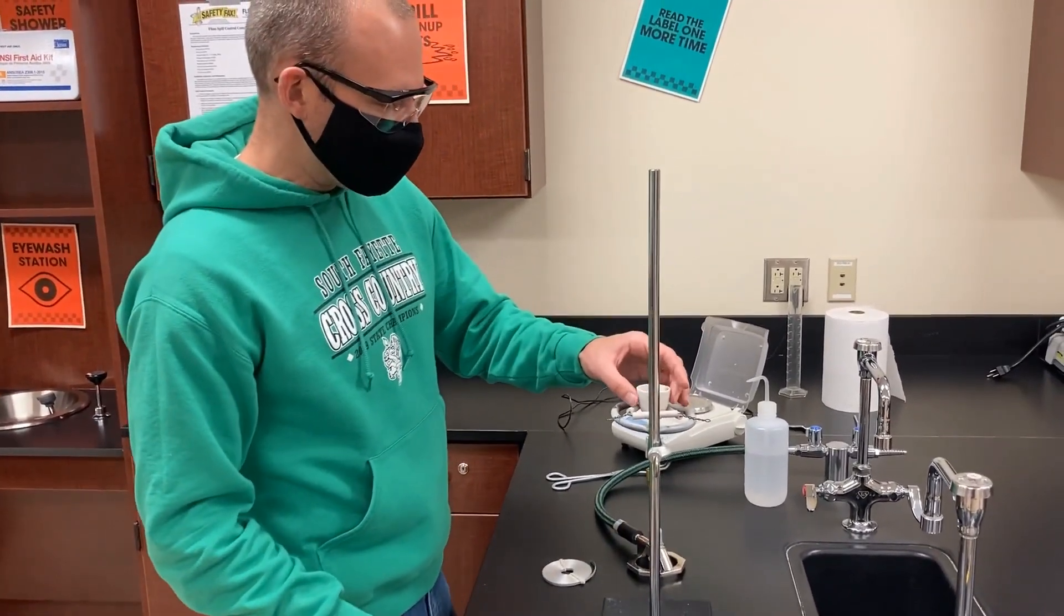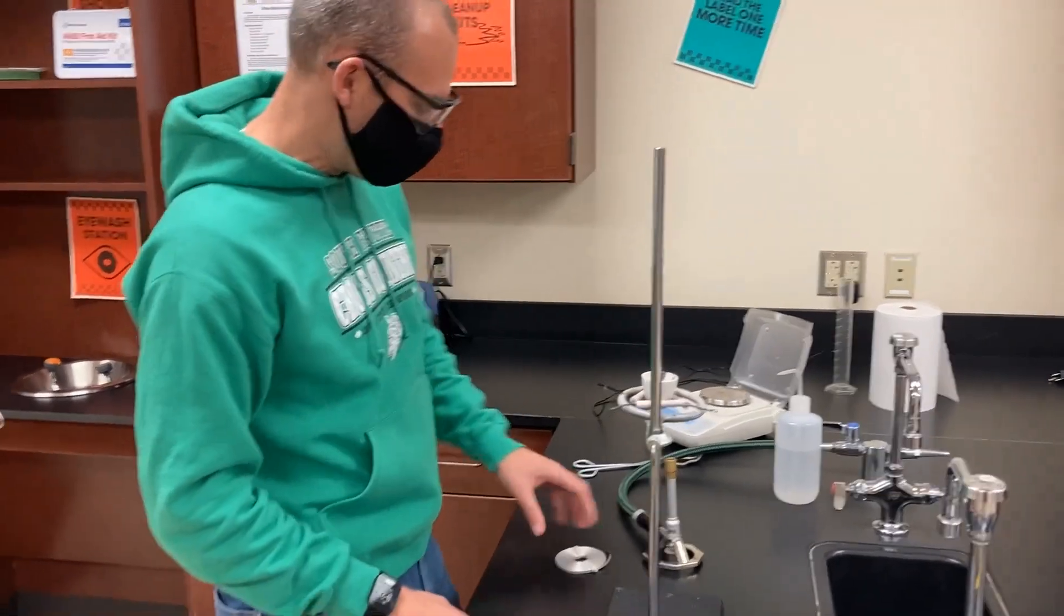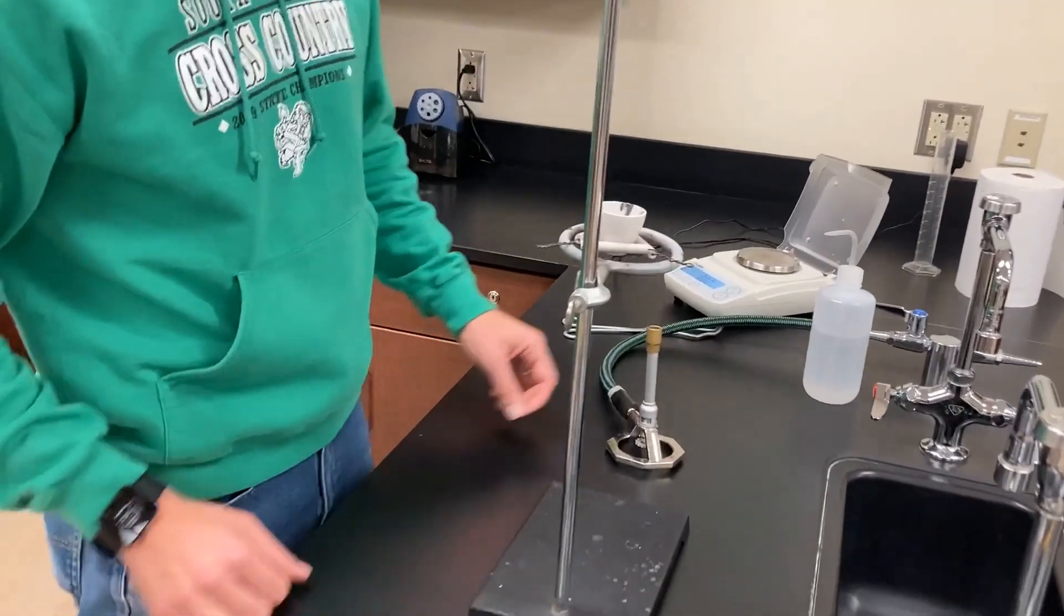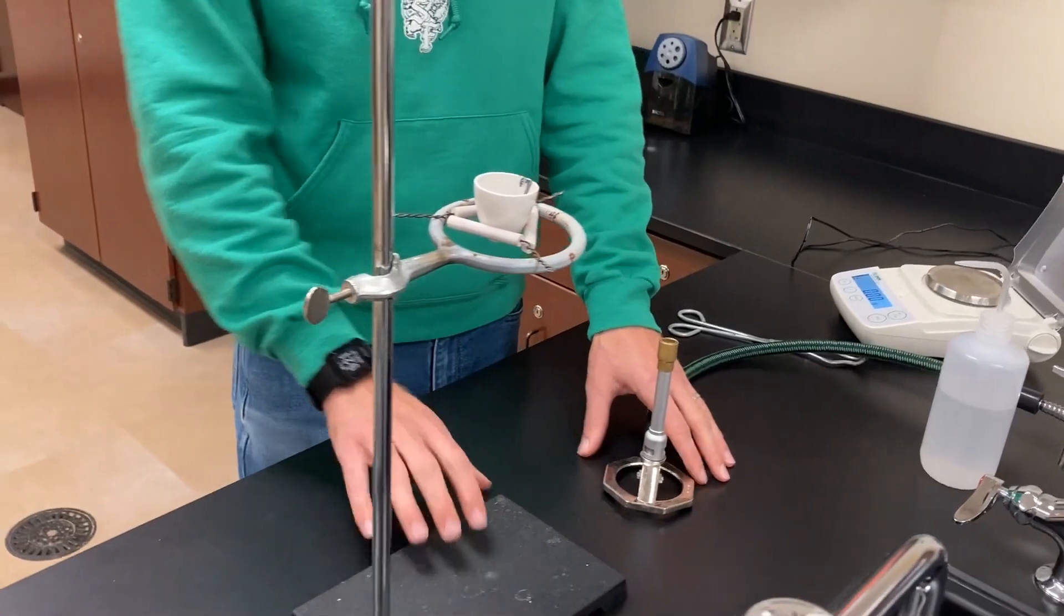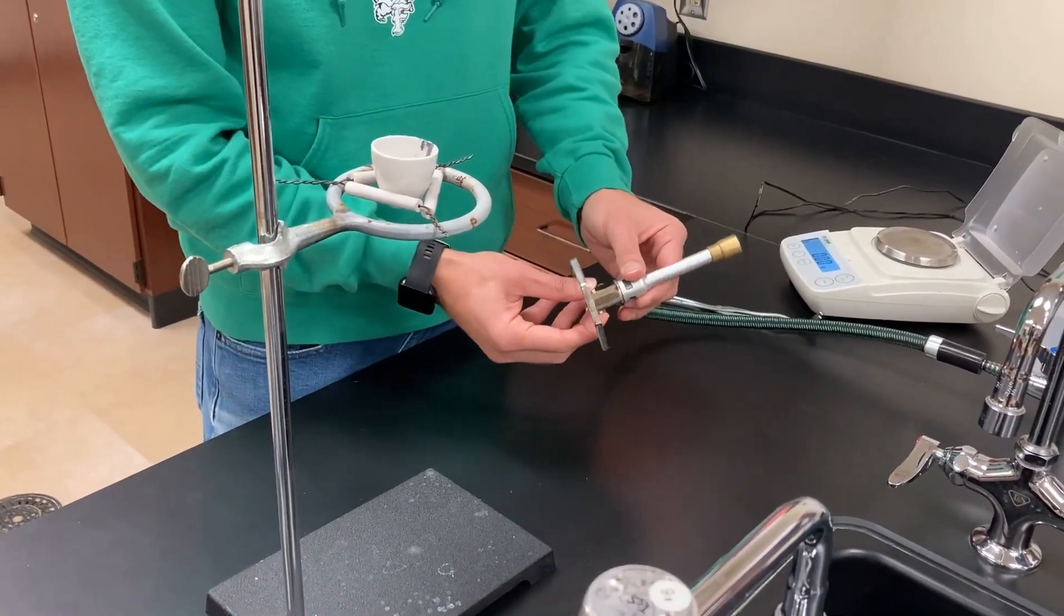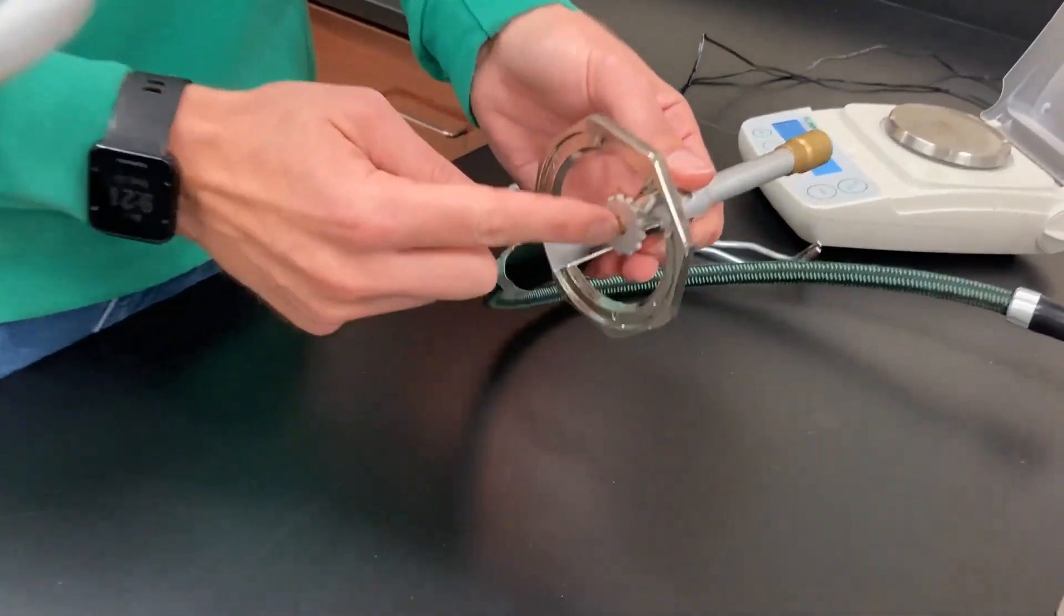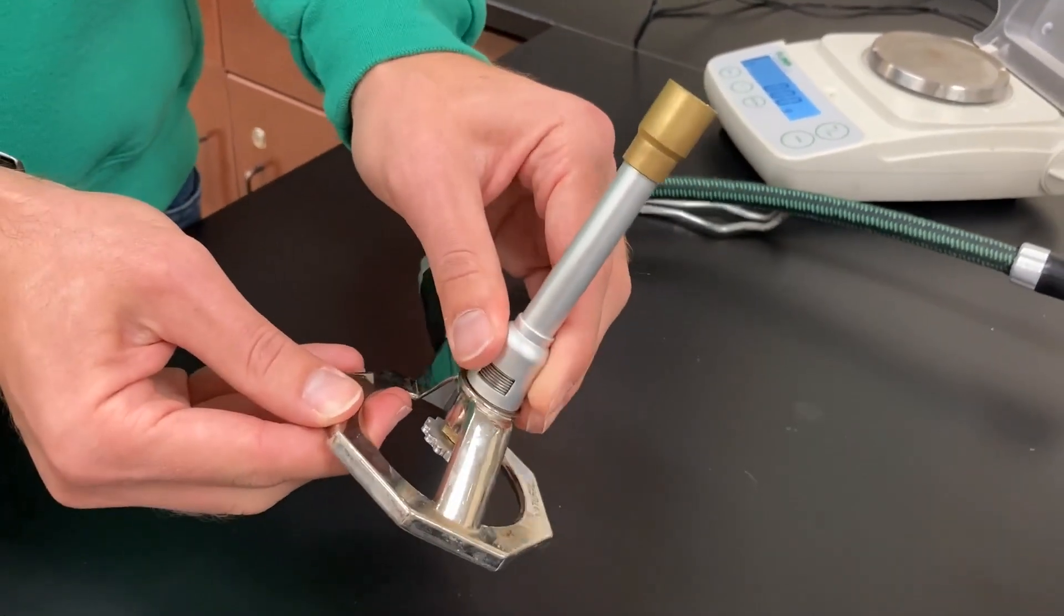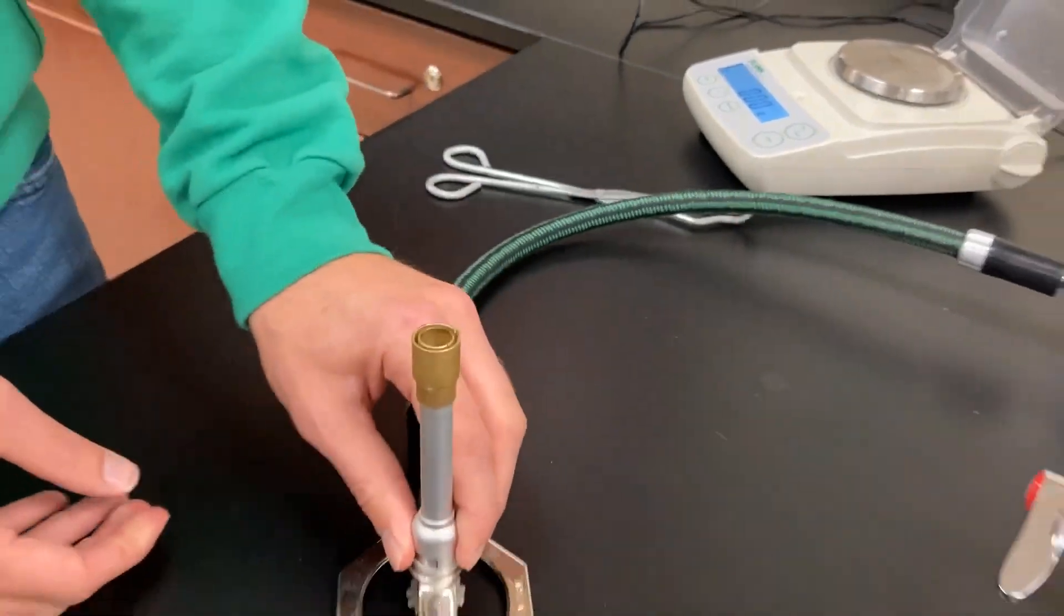So I'll put that on my ring stand. I've got that equipped with a clay triangle so that I can light a Bunsen burner and heat it rather intensely from underneath. I'm going to make sure that I start with my Bunsen burner here. Everything is closed. The little flywheel on the bottom is closed, as is the stem on the top.